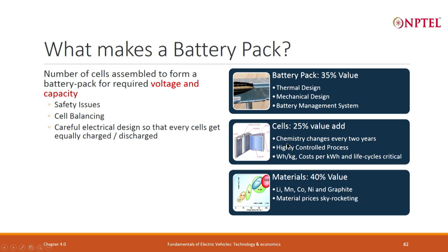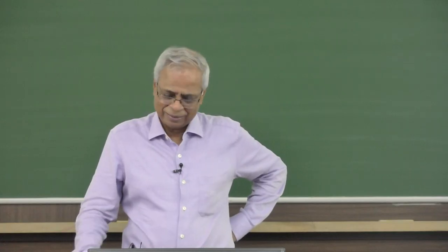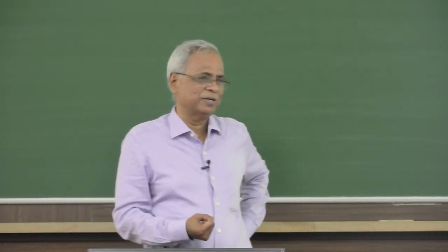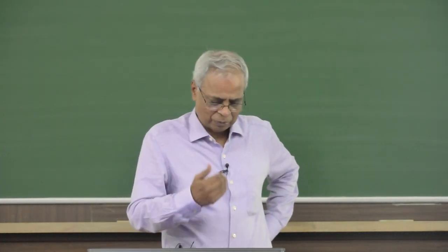The raw materials — nickel, lithium, manganese, cobalt — play a very important role. You buy raw materials to make cells, then from cells you make packs. Approximately 40 rupees for raw materials, 25 rupees for making cells, and 35 rupees for the battery pack. This is approximate and varies from pack to pack. Materials depend on the chemistry, so you look at watt-hour per kg to calculate how much kg of lithium, manganese, cobalt, and nickel you require, which determines cost.